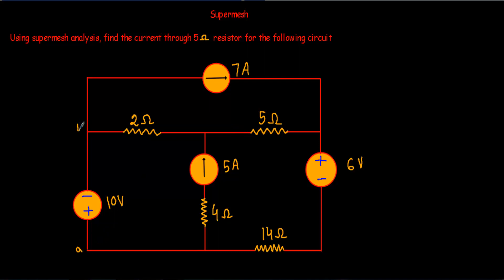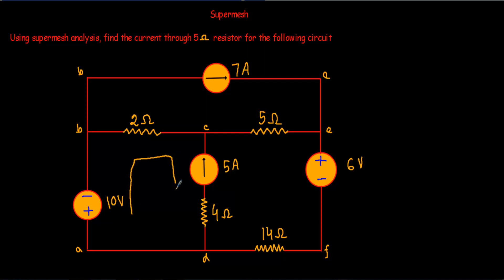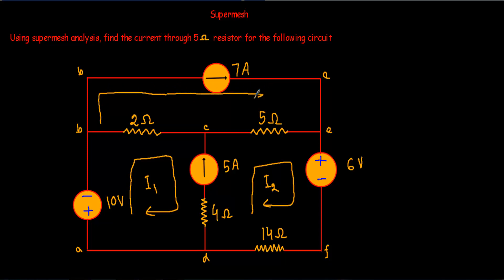Now let me start my analysis. First I have to identify the total number of meshes. A-B-C-D-A will indicate mesh number one. D-C-E-F-D will indicate mesh number two. B-E-C-B will indicate mesh number three. I have to assign the loop current to each and every loop in the clockwise direction. I have assigned loop current I1, I2 in clockwise direction in loop number two, and loop current I3 in clockwise direction.